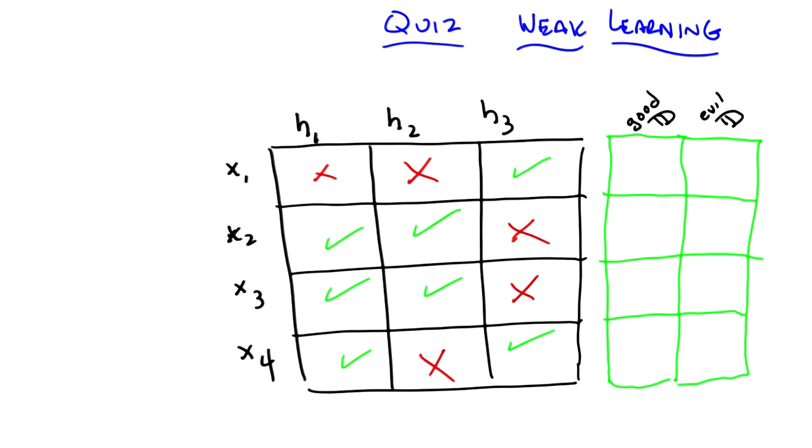Then, if you can do that, I want you to see if you can find a distribution, which might not exist, such that if you have that distribution over the four examples, a learning algorithm that only looked at h1, h2, and h3 would not be able to return one of them that has an expected error greater than a half.